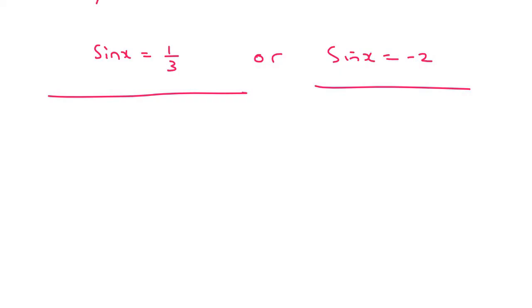So step one, find your reference angle. So your reference angle for this one, you say shift sin, and that's going to be 19.47 degrees. So then what we do is we see, okay, sin is positive because it's a third. So we're going to work in quadrant number 1 and 2.